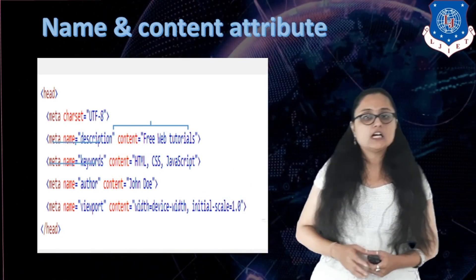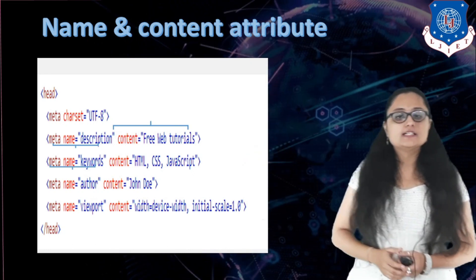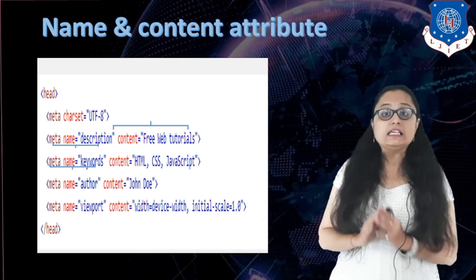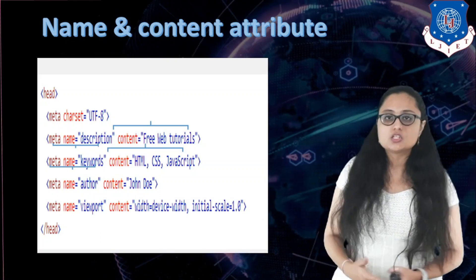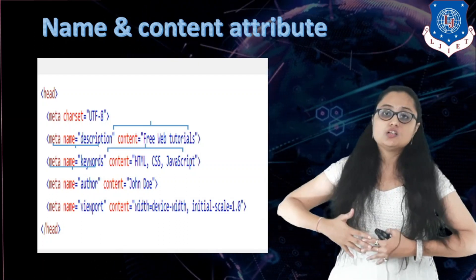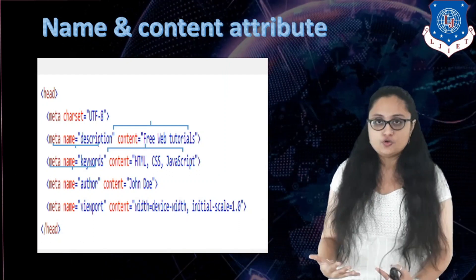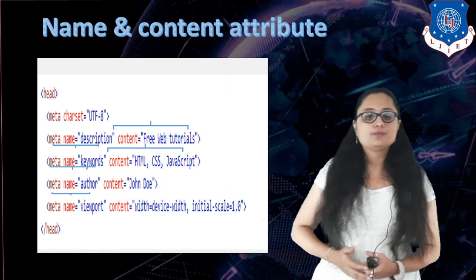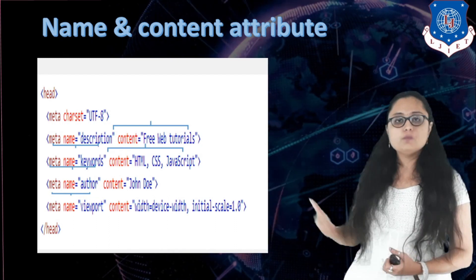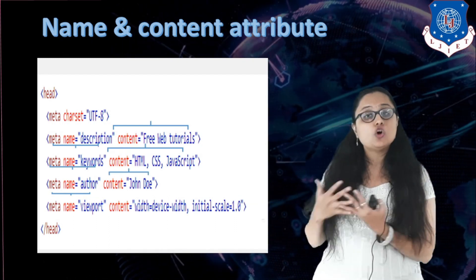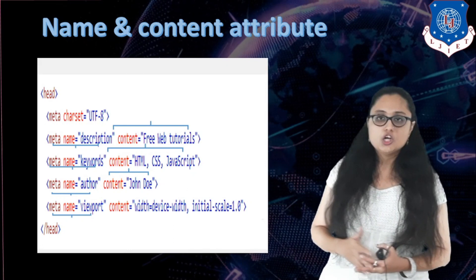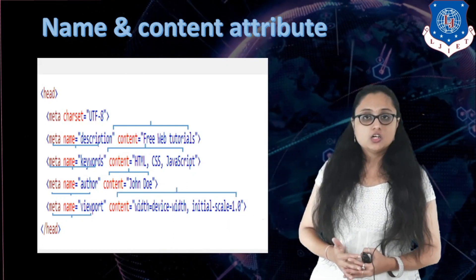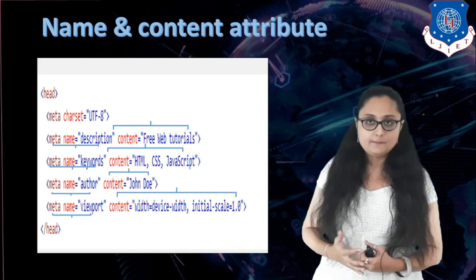The next name attribute value is 'keywords' — in content you write the keywords associated with your web page, which enhances its searchability. The next value is 'author', where content specifies the author of the HTML document. The next is 'viewport', which defines the scale of the viewport on which the web page is viewable.